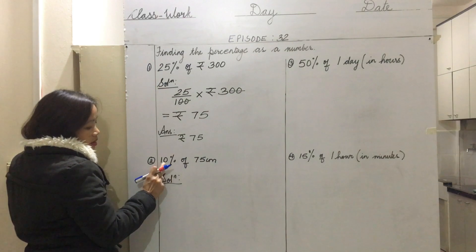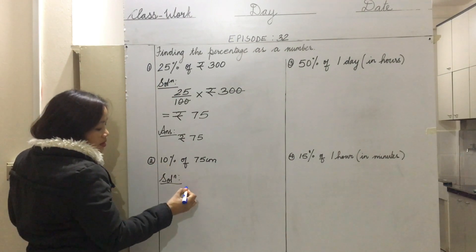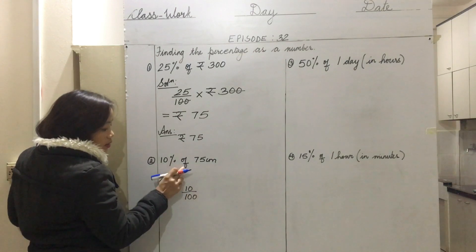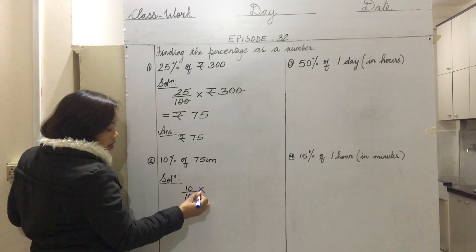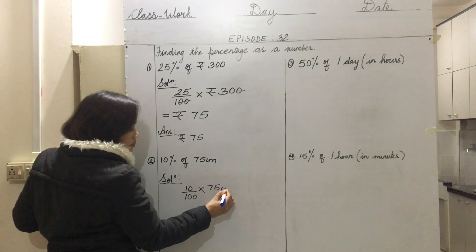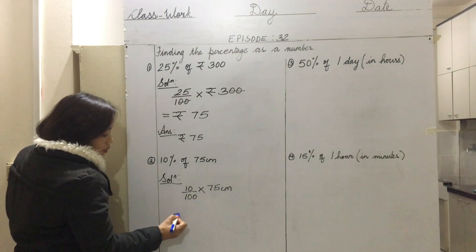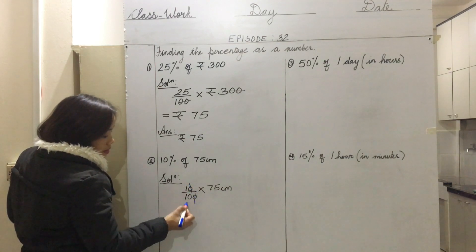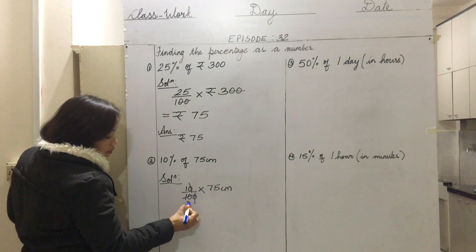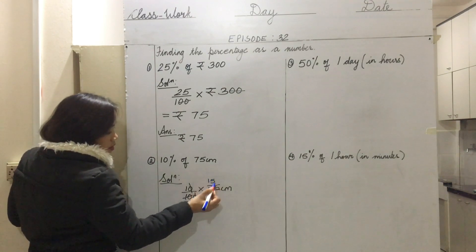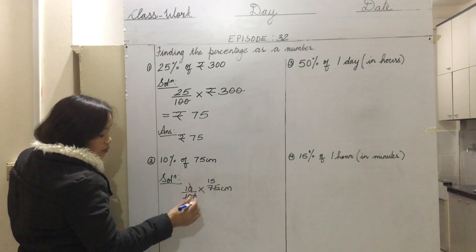Here, 10 percent means 10 by 100. Instead of 'of' we put multiplication, then 75 centimeters. Then we reduce again - zero and zero, 5 can reduce 5, 2 times 5 is 1. Then 2 and 15 cannot be reduced anymore, so 15 by 2 centimeters.